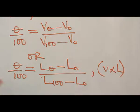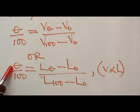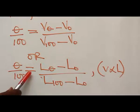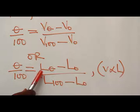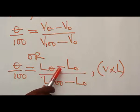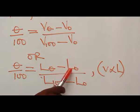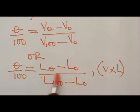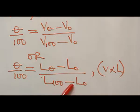Alternatively, because the volume of the liquid is directly proportional to the length, we can also use: the unknown temperature divided by 100 equals the length at that temperature minus the length at the ice point, divided by the length at 100°C minus the length at 0°C.